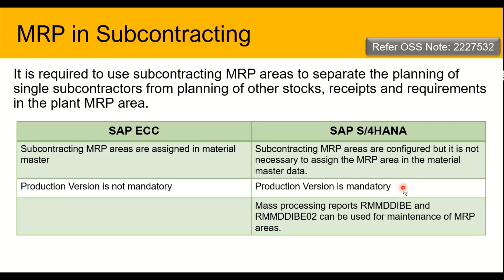In the subcontracting scenario, there is a specific bill of materials where components are supplied to the subcontractor, who processes them into a finished or semi-finished product and delivers back to us. In SAP S4 HANA, it is mandatory that the production version must be created for that particular bill of material. In this production version, we do not need to assign a master recipe or routing — it only consists of a bill of material itself. SAP S4 HANA has also provided mass processing reports RMM_DDIBE and RMM_DDIBE02 to execute maintenance of MRP areas in mass.